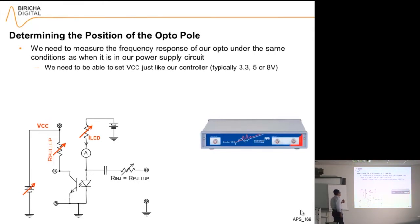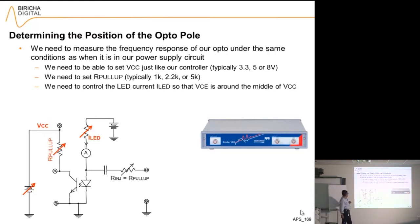So we need to be able to adjust VCC. We need to be able to adjust our pull-up. We need to be able to adjust the current through the LED so that it sits right in the middle of the linear range of VCE.